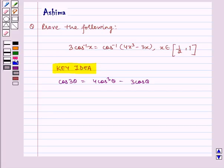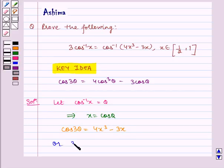Now let's proceed with our solution. Let us suppose that cos inverse of x is equal to theta, which implies x is equal to cos theta. Now using our identity, cos 3 theta is equal to 4x cube minus 3x, or 3 theta is equal to cos inverse of 4x cube minus 3x.